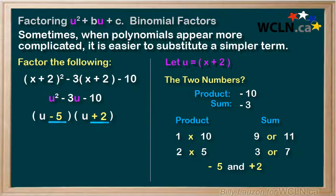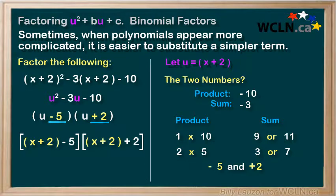We're not done. We need to replace the u's with the x plus 2's. To do this, we'll set up two large square brackets, and we'll replace the u's with the x plus 2's. In the first bracket, we'll have x plus 2 minus 5. In the second bracket, we'll have x plus 2 plus 2.